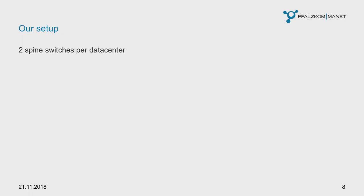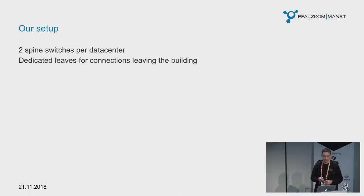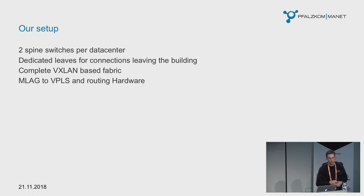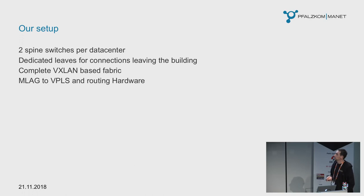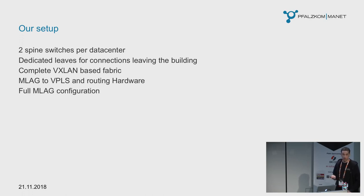What we chose is a textbook example. We have two spine switches per data center that just do normal IP routing for the VXLAN. We have dedicated leaves for all connections leaving the building because they have a bigger buffer to handle speed differences between inside connections — mainly 100 gig or 10 gig towards the customer — and outside connections which can have all different speeds. The fabric is completely VXLAN based. External connectivity is mainly done via MLAG. Our provider backbone runs the usual mix of protocols and hardware most ISPs use: VPLS, MPLS, and routing hardware, all fully redundant connected to the leaves.